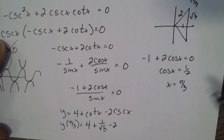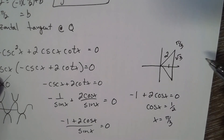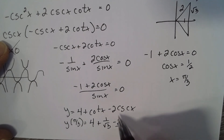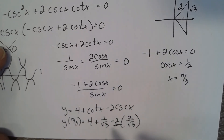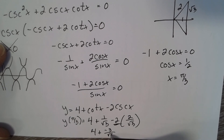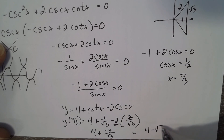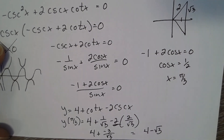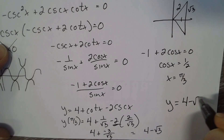The cosecant of π/3 is the reciprocal of sine, which gives 2/√3. So we have 4 + 1/√3 - 2(2/√3) = 4 + 1/√3 - 4/√3 = 4 - 3/√3. And 3/√3 simplifies to √3, giving us 4 - √3. So the y-value is 4 - √3, and the equation of the horizontal tangent line is y = 4 - √3.